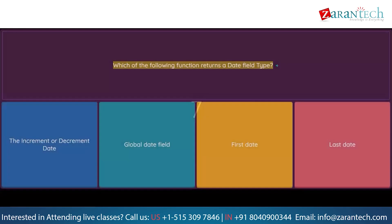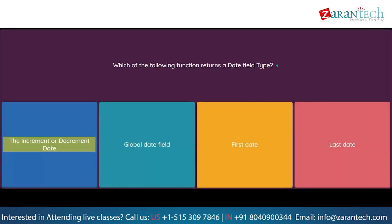Question: Which of the following functions returns a date field type? Option 1: The increment or decrement date. Option 2: Global date field. Option 3: First date. Option 4: Last date.